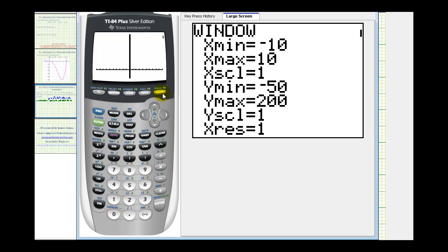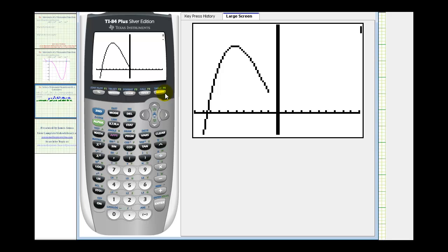And now when I press graph, we have a much better view. And again our solutions are the three x-intercepts here, here, and here.